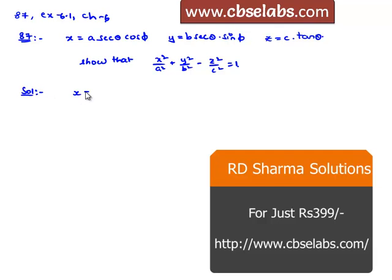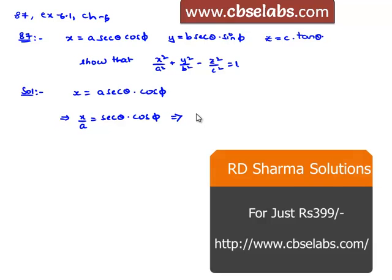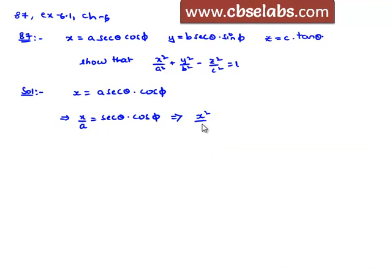Let us consider the equation: x is equal to a secant theta into cos phi, which implies x by a is equal to secant theta into cos phi. Let us square it on both sides, then we get x square by a square is equal to secant square theta into cos square phi. Let it be equation number 1.